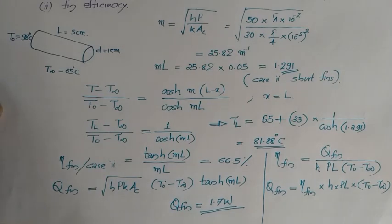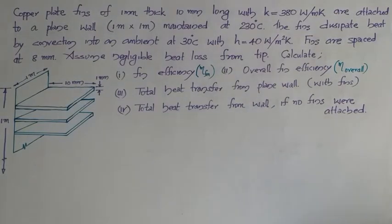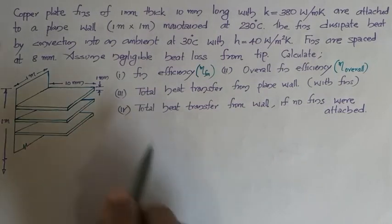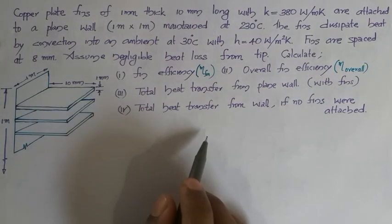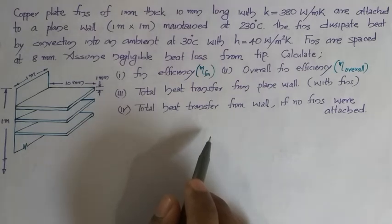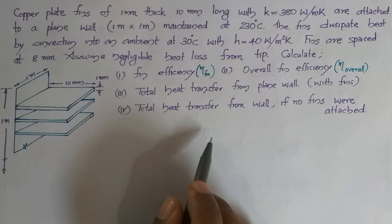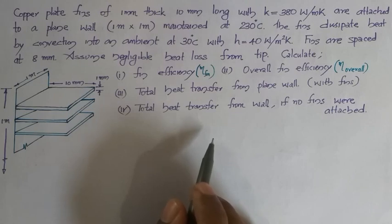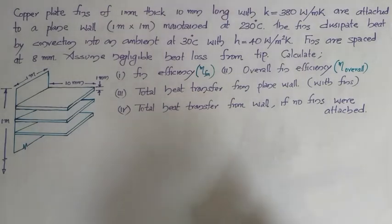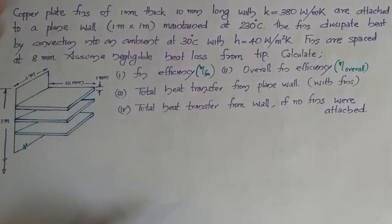Now we have another problem with multiple fins. Copper plate fins of 1 mm thick and 10 mm long, with K given, are attached to a plane wall of 1 meter by 1 meter size maintained at 230 degree Celsius. It dissipates heat into atmosphere at 30 degree Celsius with H = 40 watts per m² Kelvin. Fins are spaced at 8 mm. Neglect heat loss from the tip and calculate fin efficiency, overall fin efficiency, heat transfer, and heat transfer if no fins were attached.